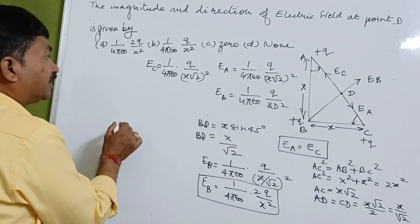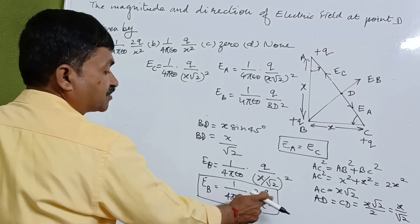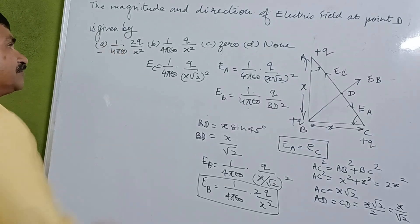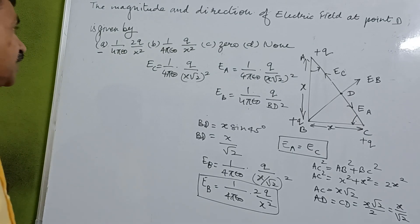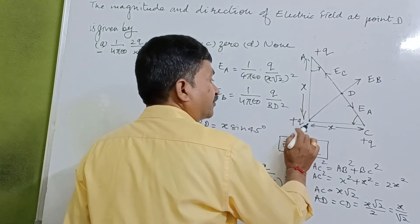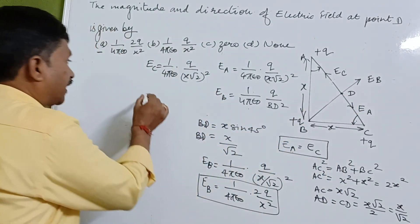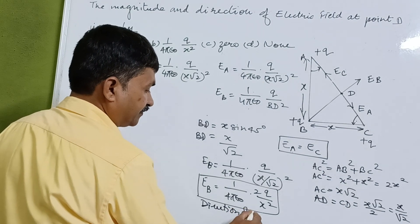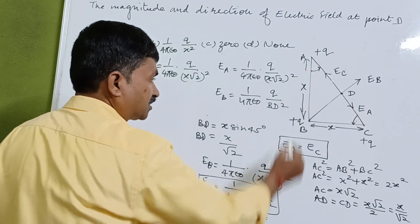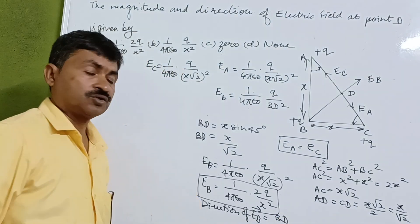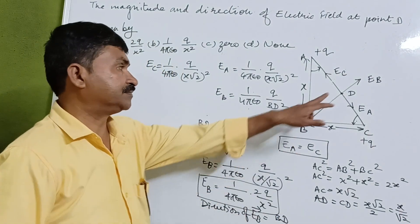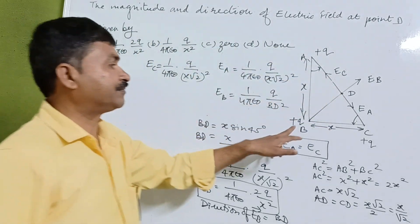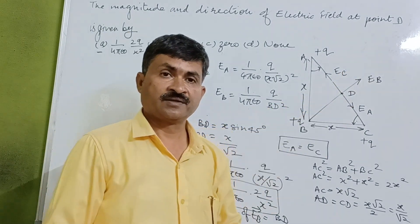So the electric field EB is equal to 2 times Q upon X squared. Looking at the options, this is the correct option. The direction in which it is acting is from B to D. Finally, we can say the magnitude of the electric field acting here corresponds to option A, and the direction will be from B to D.